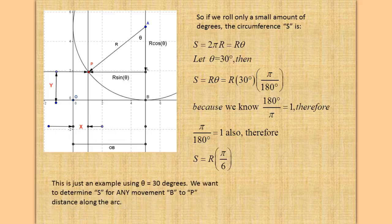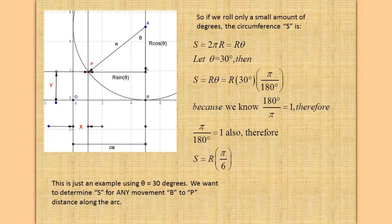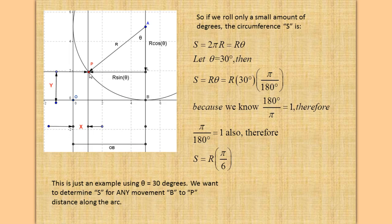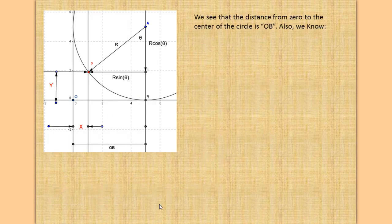That's just an example using θ equals 30 degrees. Let's say θ equals 30 degrees. Then s equals r times θ equals r times 30 degrees. To convert degrees to radians, we multiply by π over 180 degrees. Because we know 180 degrees divided by π equals 1. Therefore, π over 180 equals 1 also. Therefore, s equals r times π over 6.